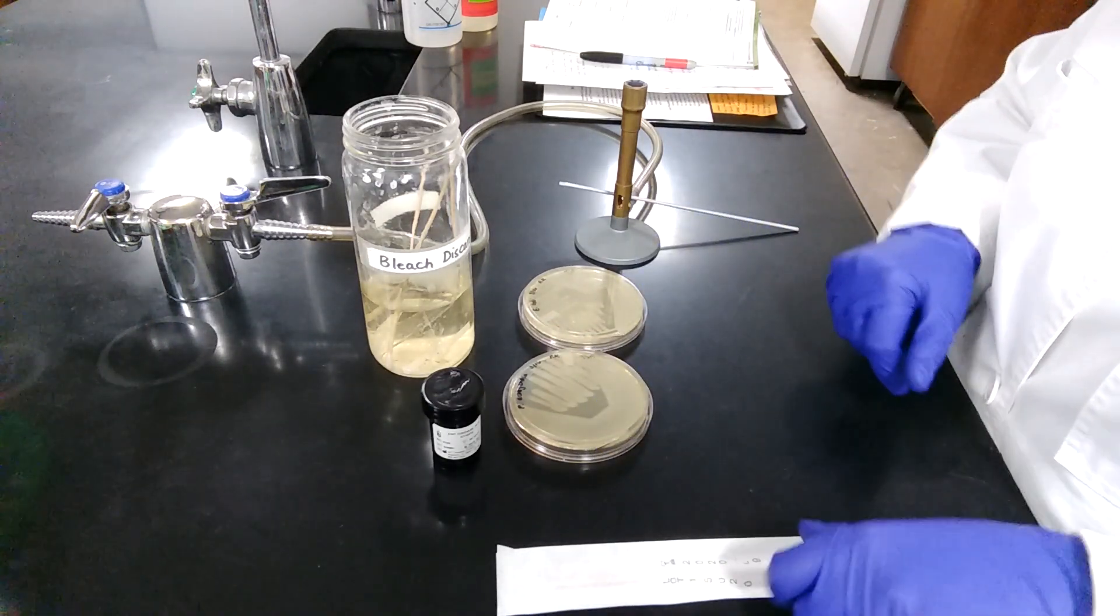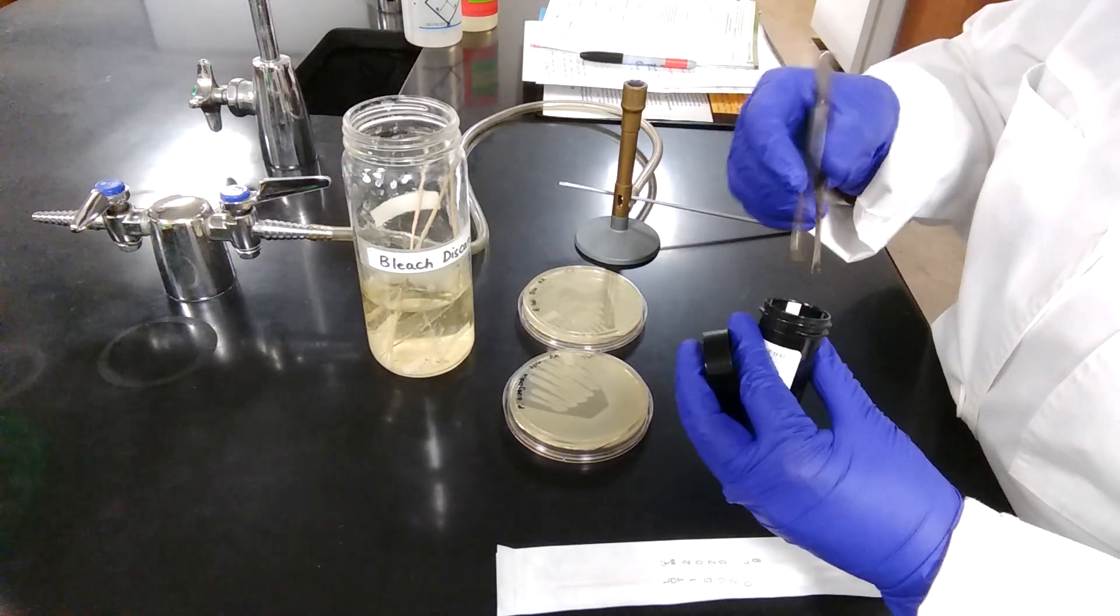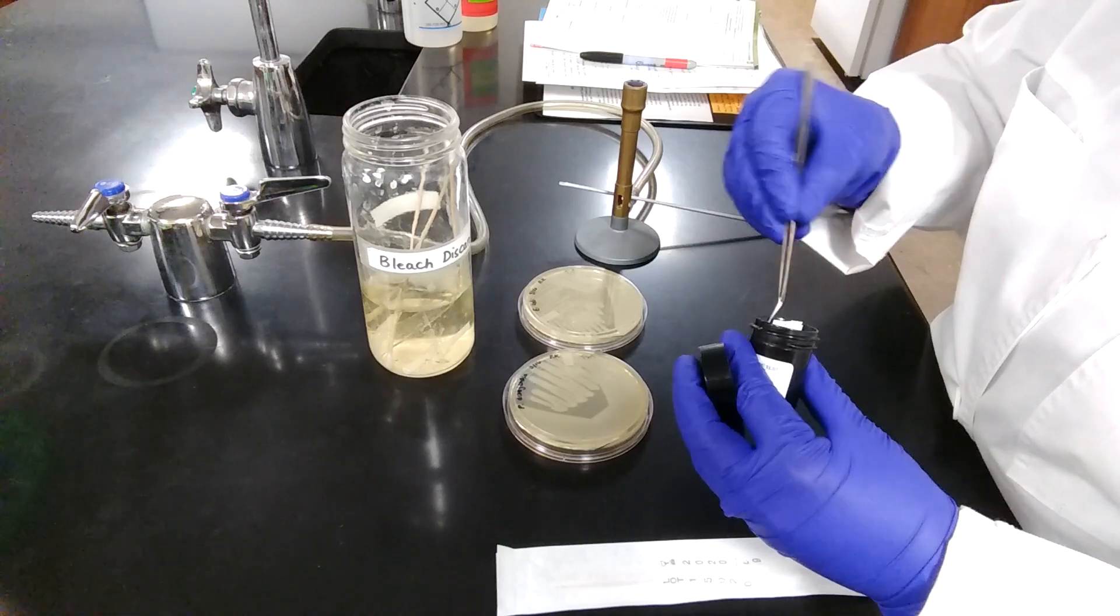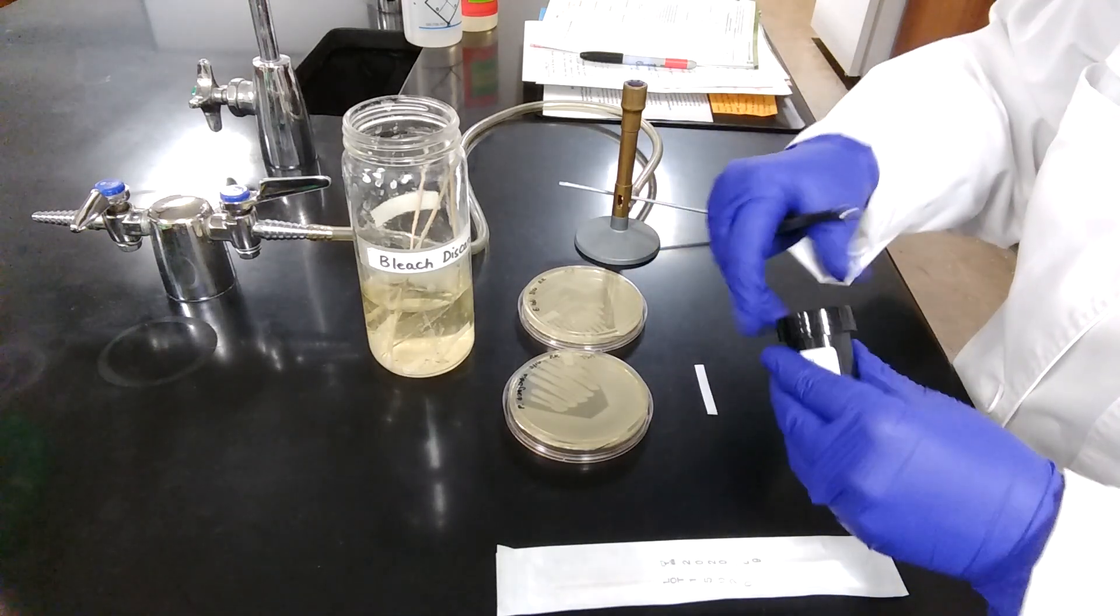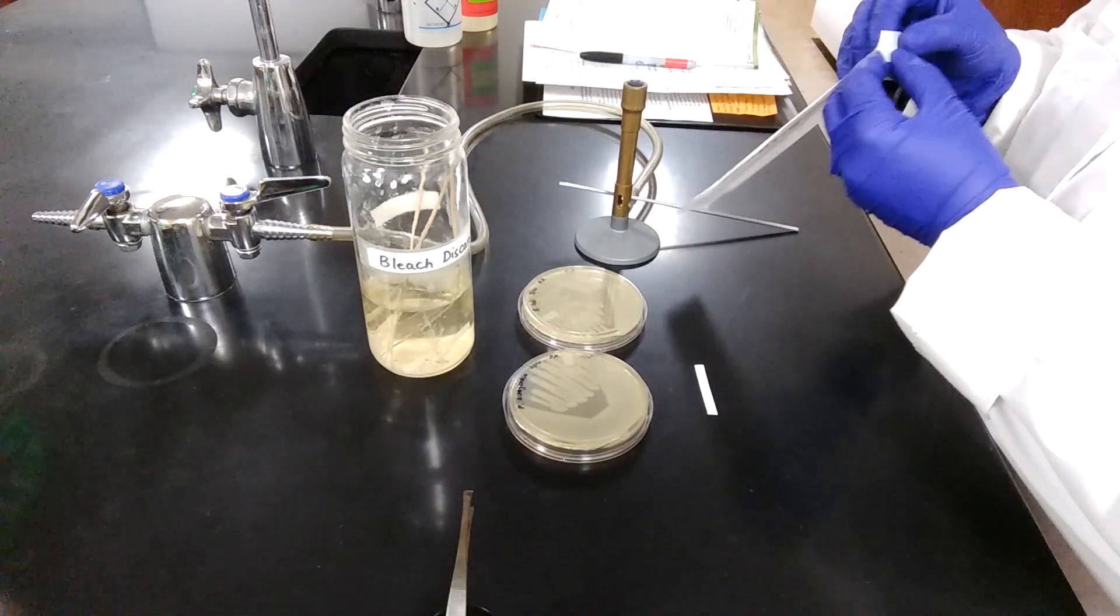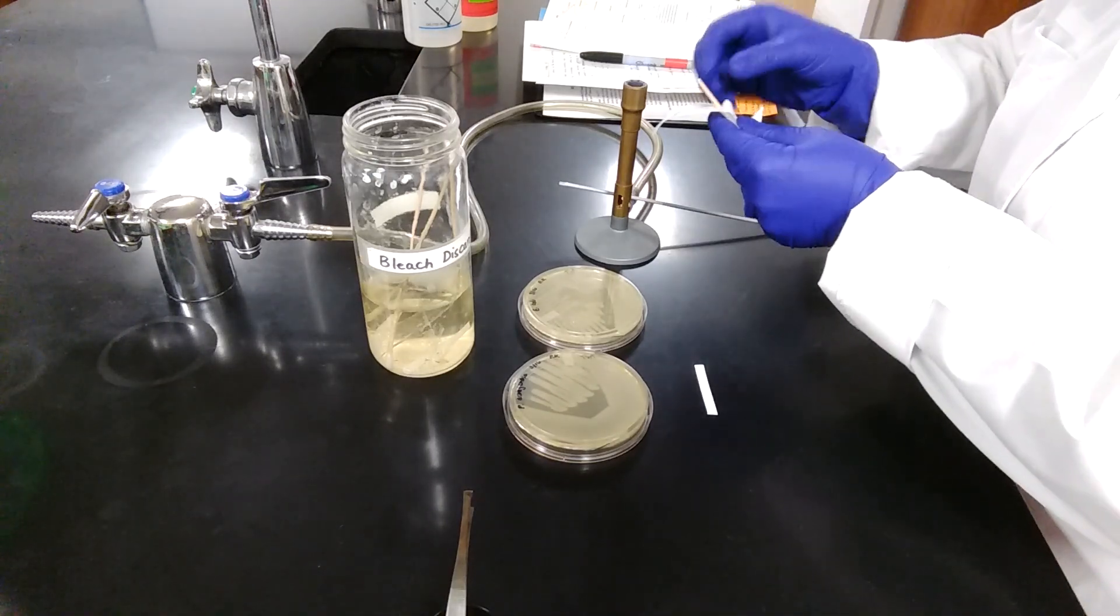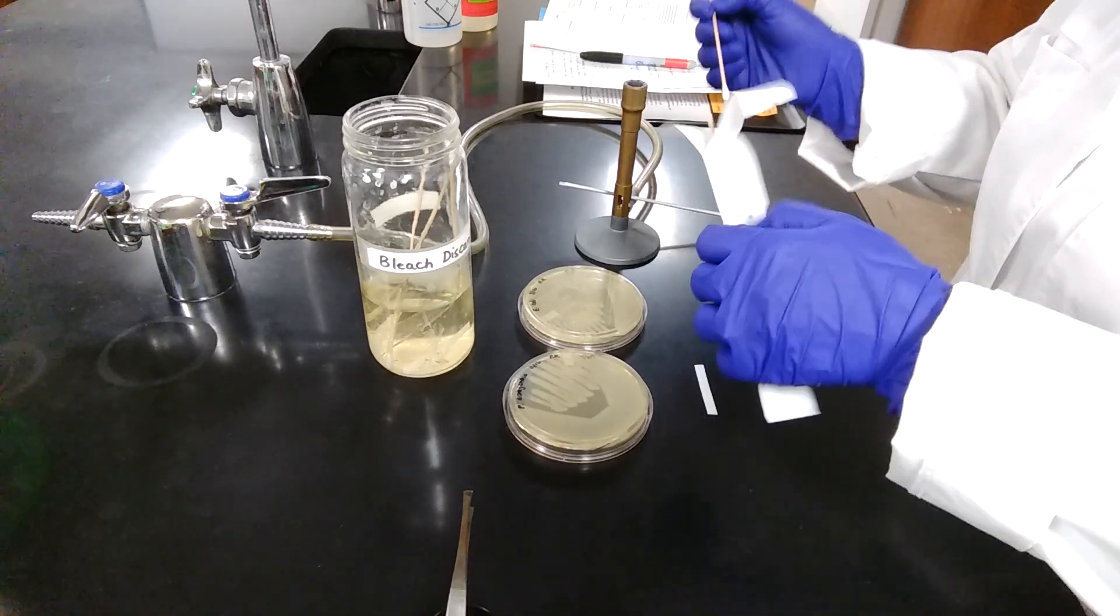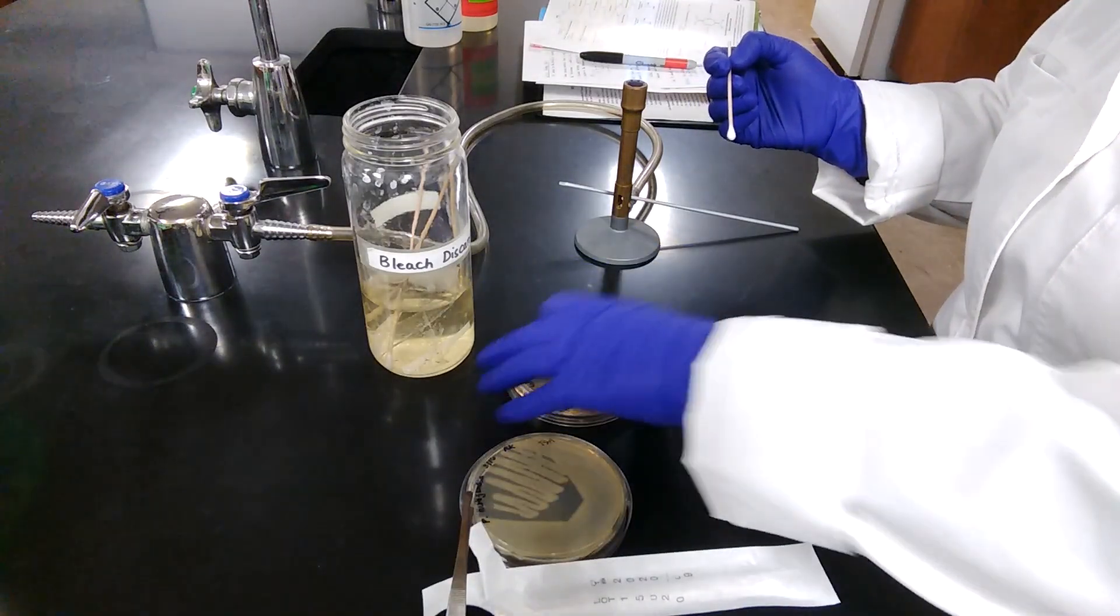For the experiment, first of all, we'll need the paper strip. So I'm taking out a paper strip from this container here. As I told you before, the paper strip contains the oxidase test reagent. Next, we'll transfer the bacterial cultures onto the paper strip using sterile cotton swabs. Aseptically, transfer a good amount of the bacterial culture onto the paper strip.